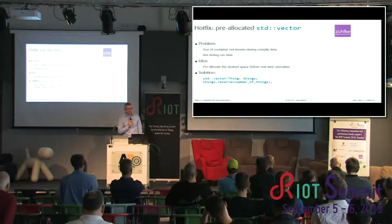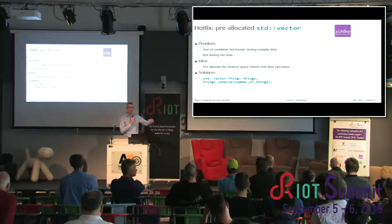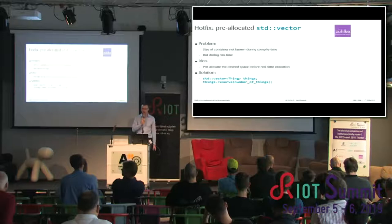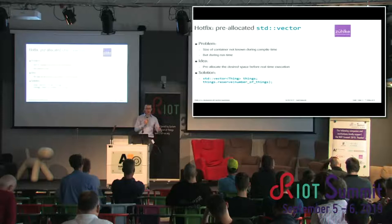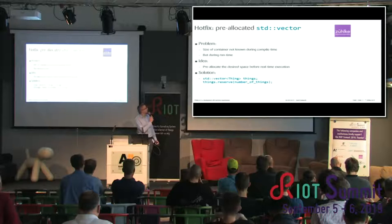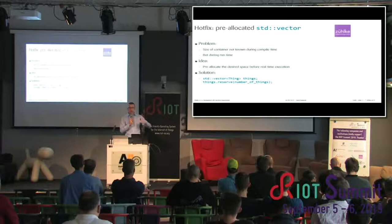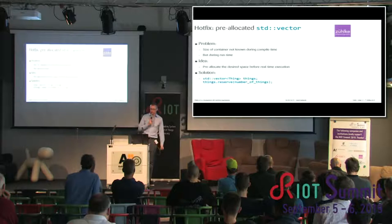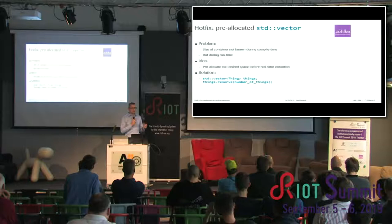Now some code samples — problems and solutions I'm calling 'hot fixes' because they're usually later changes. The first problem: the size of a container is not known at compile time, so we can't use std::array. But we know the size at runtime eventually. The idea is to pre-allocate space before real-time execution — a common pattern. The solution is simple: take a vector of things and call reserve with the maximum number of things. This pre-allocates enough memory, so subsequent inserts and appends won't trigger the allocator. This also works for strings and, to some degree, for hash tables in C++.